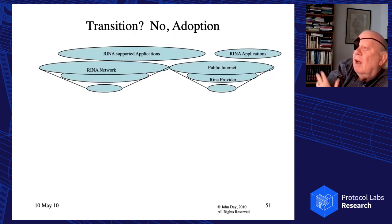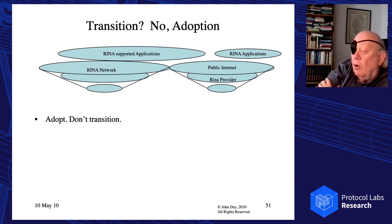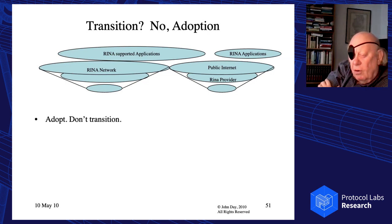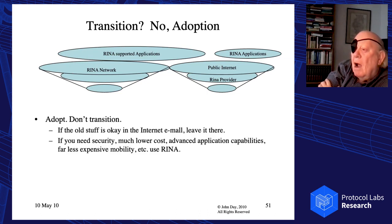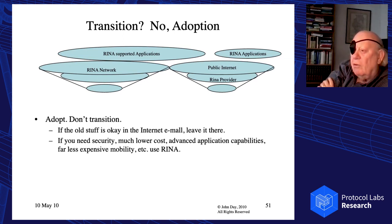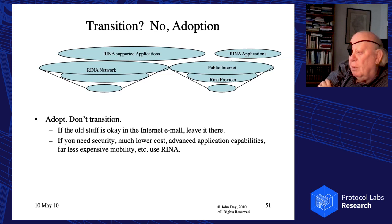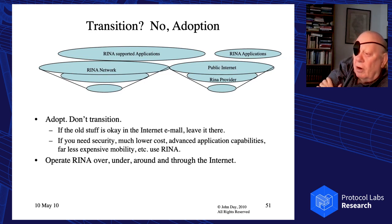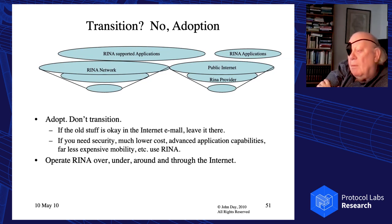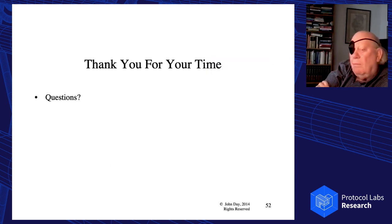Regarding transition: I don't believe in transition, I believe in adoption. Don't worry about transition — transition will solve itself. We can operate RINA over, under, alongside the current internet. The old stuff is okay; just leave it there. If you need security, much lower costs, advanced application capabilities, far less expensive mobility — use RINA. Operate RINA over, under, through the current internet, and probably start with private networks.